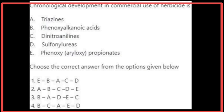The chronological development in the commercial use of herbicides is: phenoxyalkanoic acids, followed by dinitroanilines, followed by triazines, followed by phenoxypropionates, and lastly sulfonylureas. The correct answer is B, C, A, E, D — that is, the fourth option.